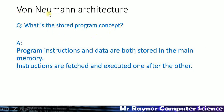This is called Von Neumann architecture. There was a guy called John Von Neumann and he and his colleagues had the idea that rather than having the program separate — maybe on punch cards or through flicking switches to program an old computer — we could store the program along with the data in the same memory, like the RAM in a modern computer. Instructions are fetched and executed one after the other from the memory.